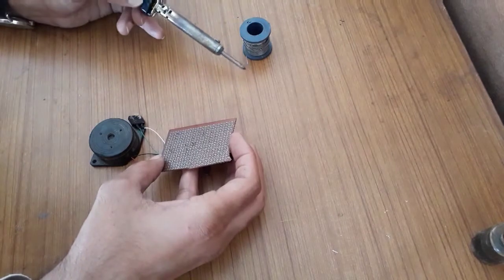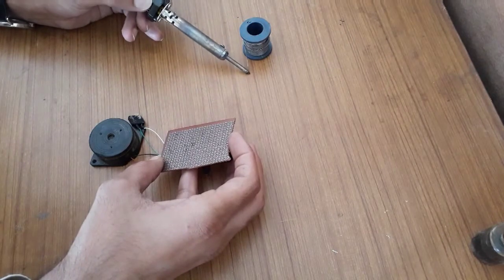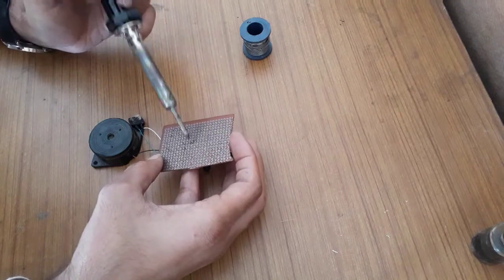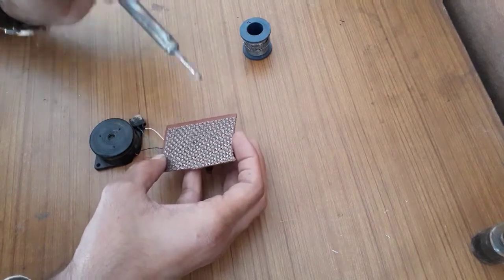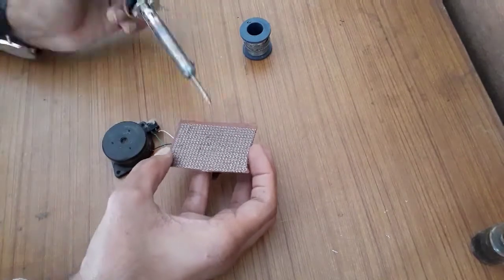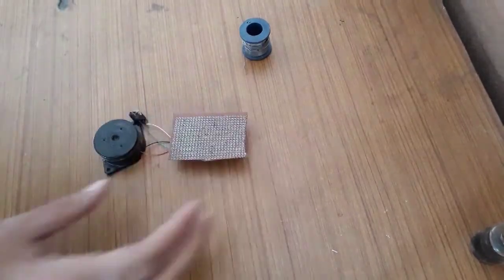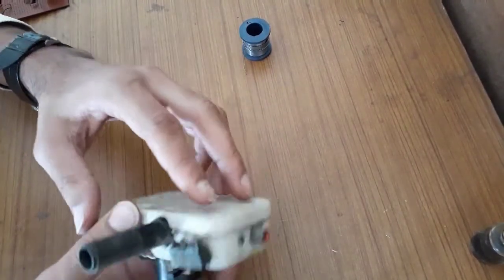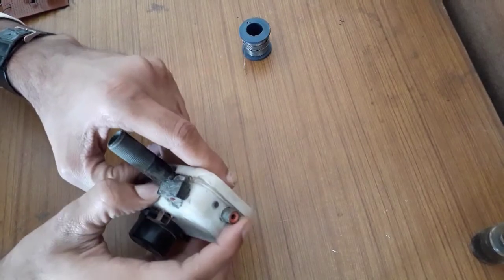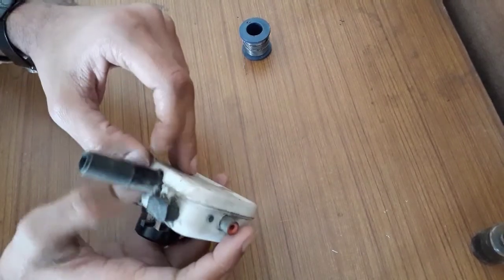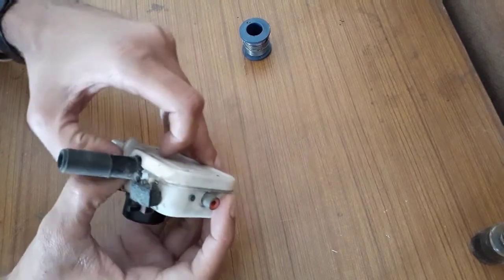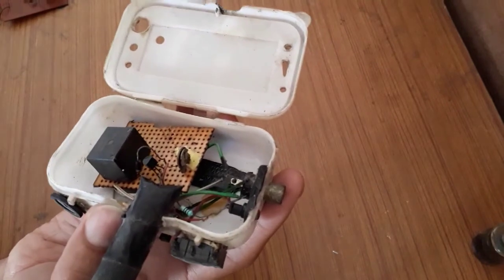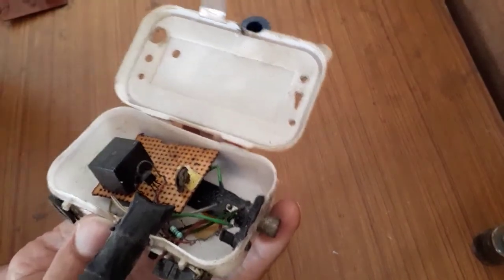Now we will solder them in their positions. Here I have made this before. This black pipe is to put the LDR so that it doesn't get distracted by the surrounding light. Here I have placed this variable resistor in place of the 10 kilo ohm resistor, and here's the volume control and the power source.